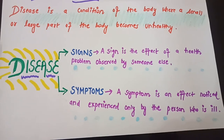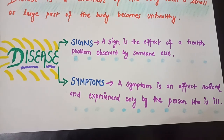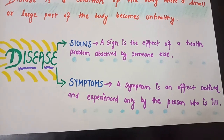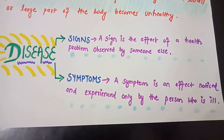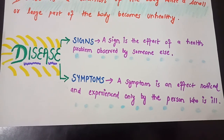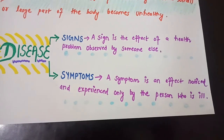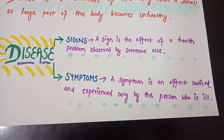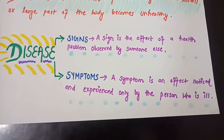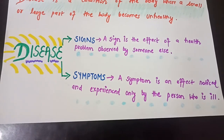For example, if someone has rashes on his or her body, it is a kind of sign that any person can easily observe — and the person themselves can also observe it — so in this case it will be termed as both signs and symptoms. But if a person is suffering from fever, they may have different symptoms such as weakness, warm forehead, and headache.